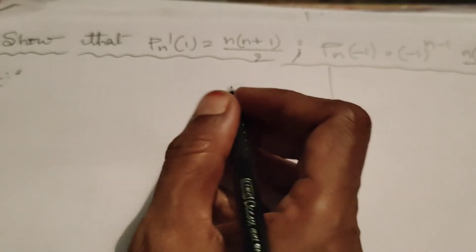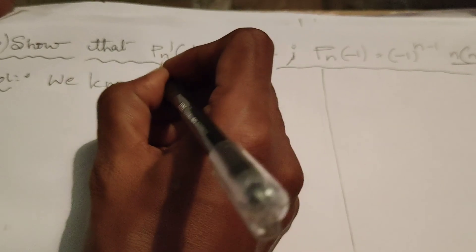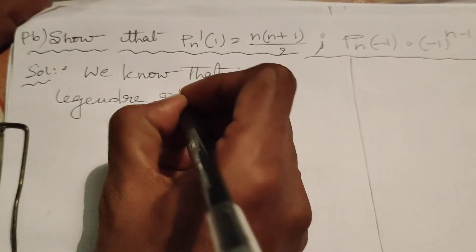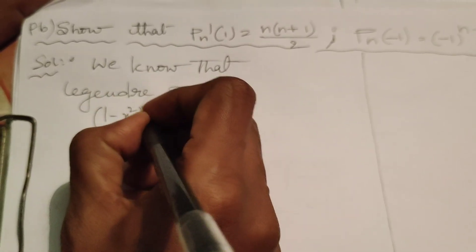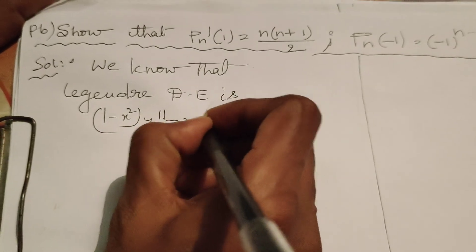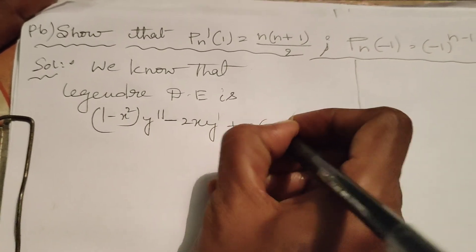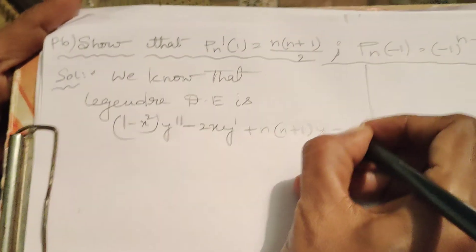First of all, here I write the Legendre differential equation. We know that the Legendre differential equation is: (1 - x²)y'' - 2xy' + n(n+1)y = 0.